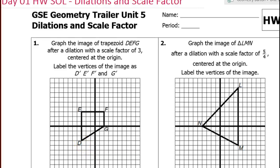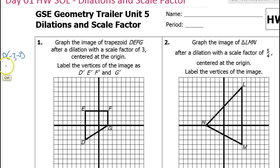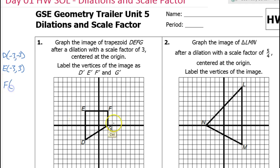The first thing we have to do is list off the vertices of the original shape. Point D is negative 3, negative 3. Point E is negative 3, positive 3. Point F is 2 comma 3. And point G is 2 comma 0.